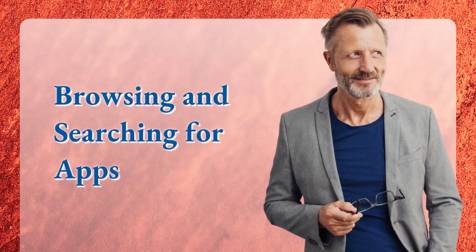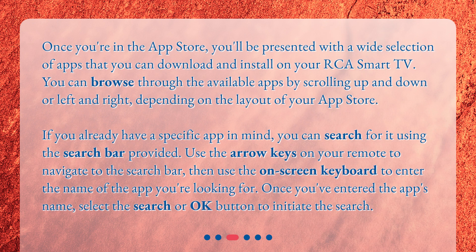Browsing and searching for apps. Once you're in the App Store, you'll be presented with a wide selection of apps that you can download and install on your RCA Smart TV. You can browse through the available apps by scrolling up and down or left and right, depending on the layout of your App Store. If you already have a specific app in mind, you can search for it using the search bar provided. Use the arrow keys on your remote to navigate to the search bar, then use the on-screen keyboard to enter the name of the app you're looking for. Once you've entered the app's name, select the Search or OK button to initiate the search.